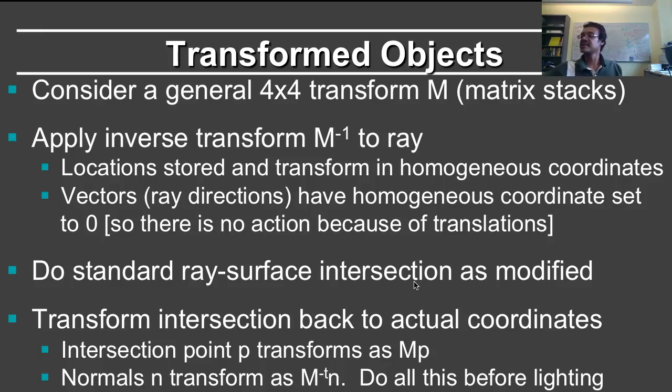So let's go over this and you know, homework three, you should support general transform stacks just as you do in homework two. You consider a general four by four transform. You apply the inverse transform to the ray. So the locations are stored and transformed in homogeneous coordinates. The vectors, the ray directions have homogeneous coordinates set to zero. So there's no action because of translations. You do the standard ray surface intersection as modified. And then you transform the intersection back to the actual coordinates. So you apply the transformation matrix M. The normals transform as M inverse transpose times M. That's very important. And finally, you do the lighting. You recompute the distances.